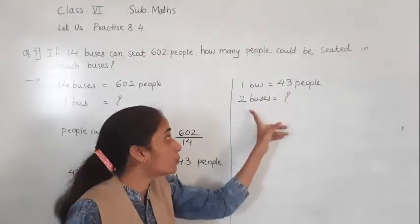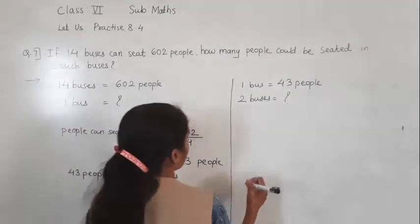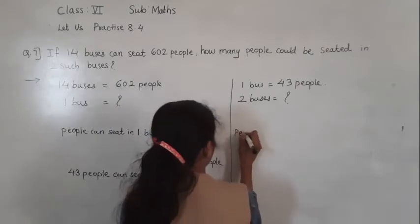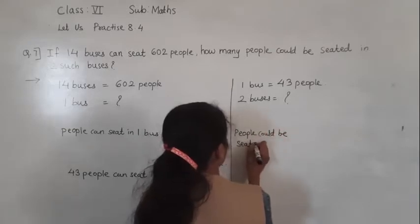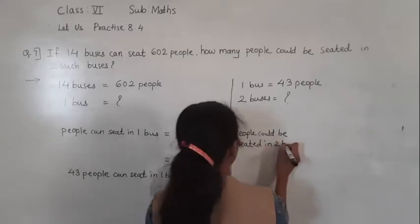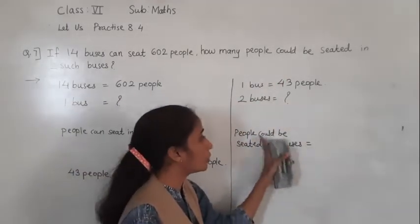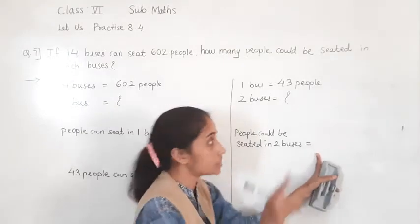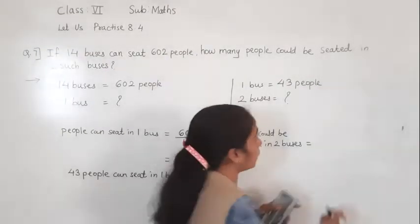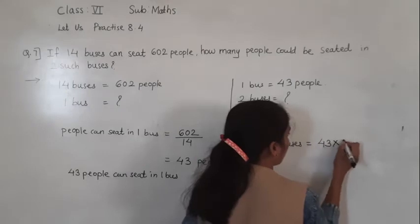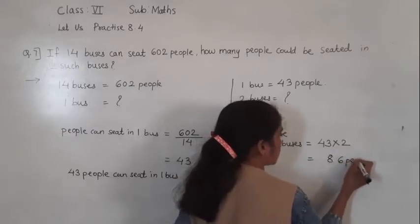Now we have to find for 2 buses. We have got for 1 and we have to find for many — meaning 1 to 2 — so we need to multiply. So 43 people multiplied by 2: 2 threes are 6, 2 fours are 8. So we get 86.